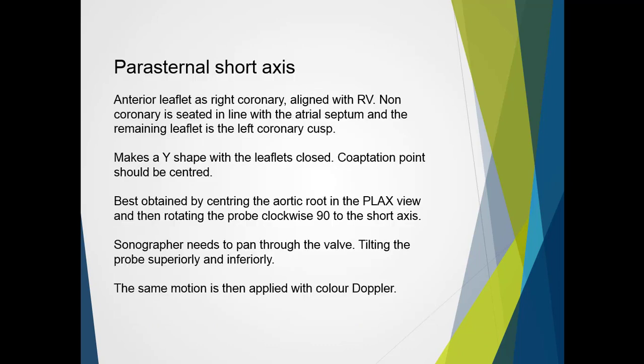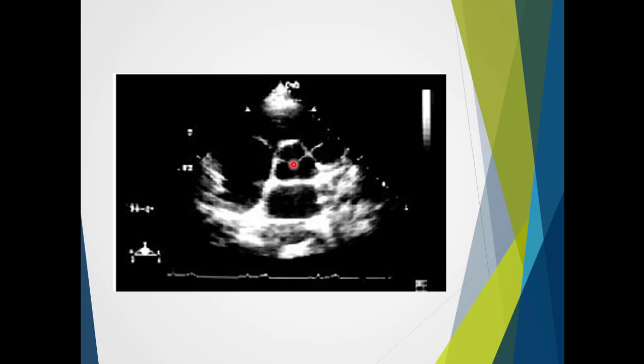The parasternal short axis demonstrates the anterior leaflet as the right coronary, aligned with the right ventricle. The non-coronary leaflet is seated over the atrial septum, and the remaining leaflet is therefore the left coronary cusp. This makes a Y shape when the valve is closed, and the coaptation point should be centered. This view is best obtained by centering the aortic root from the parasternal long axis and rotating the probe clockwise approximately 90 degrees. The sonographer needs to pan through the valve, tilting superiorly and inferiorly, moving from the left ventricular outflow tract up to the sinotubular junction level, and the same motion is applied with colour to identify the origin and direction of jets. In a standard parasternal short axis image, the typical Y shape is visible with the non-coronary leaflet over the interatrial septum, the right coronary associated with the right ventricle, and the remainder being the left coronary.